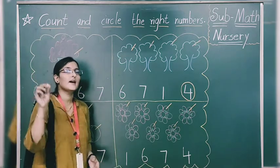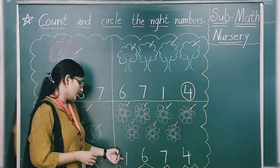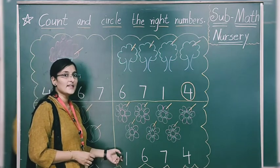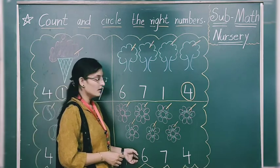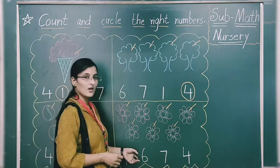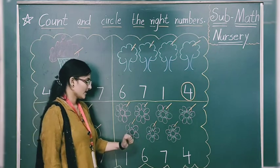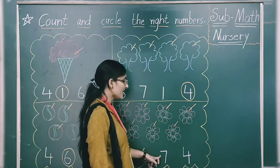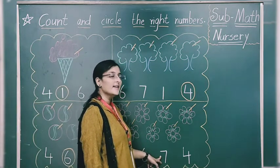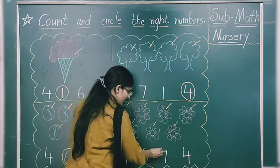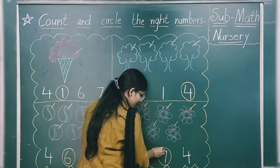What do we have to do? Circle. Look at here — is this number 7? No. Is it 7? No. Which number is this? 6. Is it 7? Yes. So we will do circle on number 7.